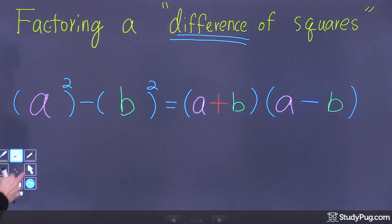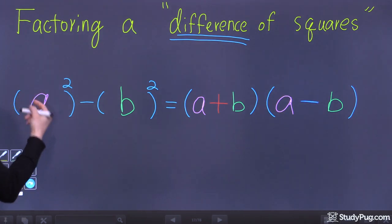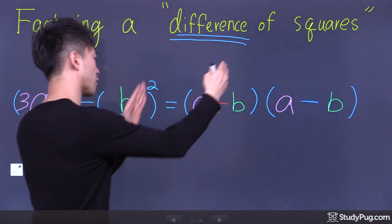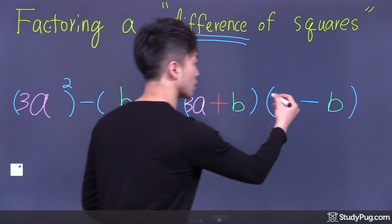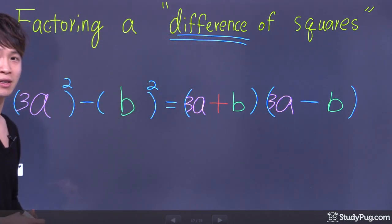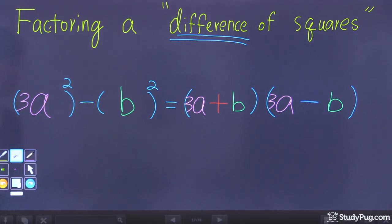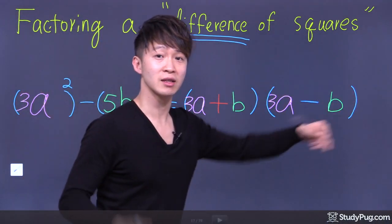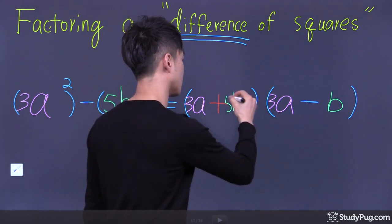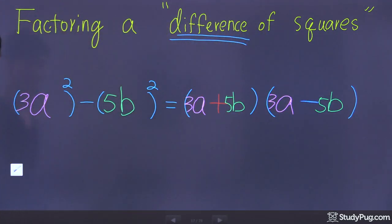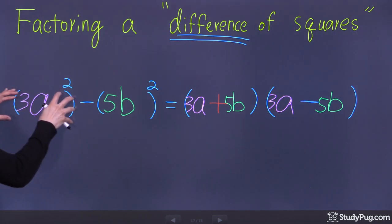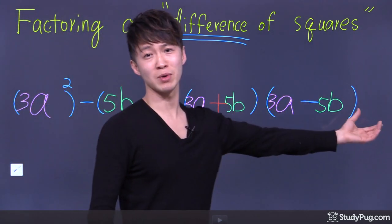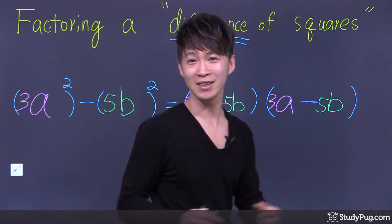For example, if I change the first guy from a to 3a, then the first term in each bracket must be 3a. And if the second guy is 5b, then the second term inside each bracket must be 5b. So 3a squared minus 5b squared factors as 3a plus 5b times 3a minus 5b.